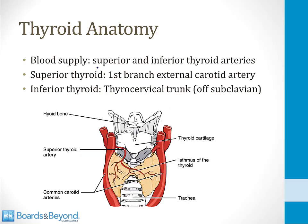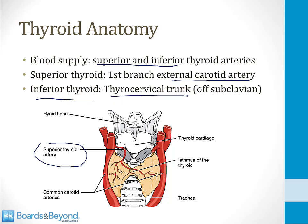The blood supply comes from the superior and inferior thyroid arteries. The superior thyroid artery, shown on screen, is the first branch of the external carotid artery on either side. The inferior thyroid artery is a branch of the thyrocervical trunk, which comes off the subclavian artery on both the left and the right.